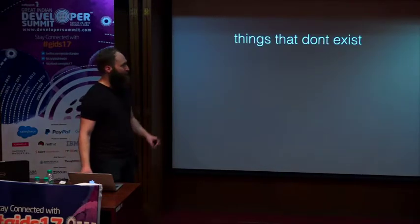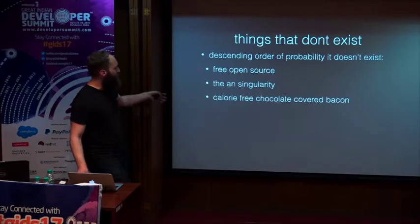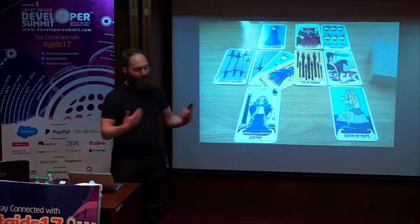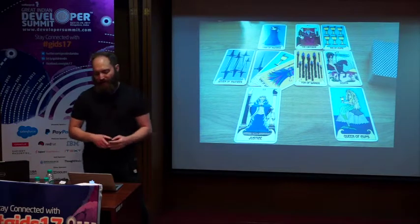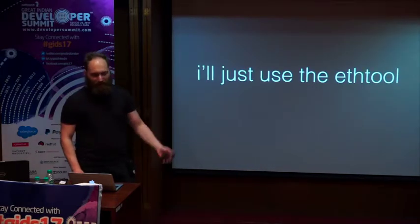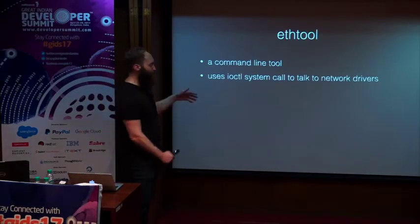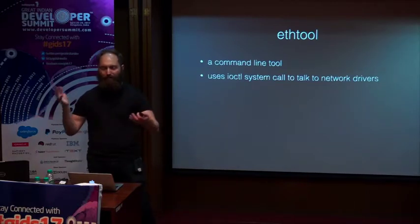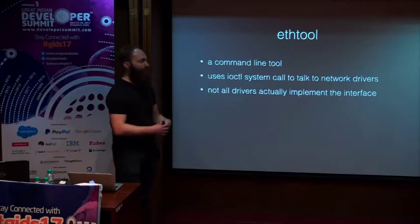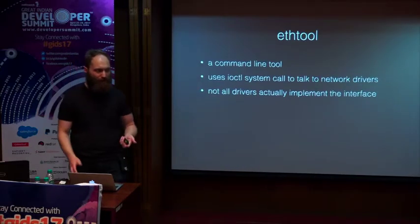Which brings me to a list of things that don't exist — in descending order of probability: there's no such thing as free open source software, no such thing as a singularity, and no such thing as calorie-free chocolate-covered bacon. Now, if you were paying attention, you saw that using ETH tool can avoid this bug in ProcNet Dev. ETH tool is a command line tool that uses the IOCTL system call to communicate with a network device driver. But the sad thing is that not every network device driver actually implements this interface, so you can't necessarily use this tool for every network device. And even the devices that do implement it all do it differently, so you can't rely on the information making sense between different versions or different devices.